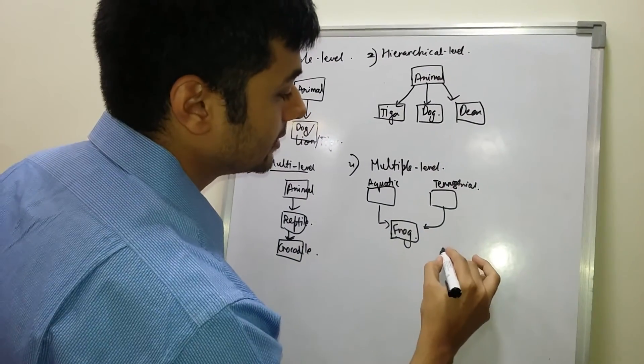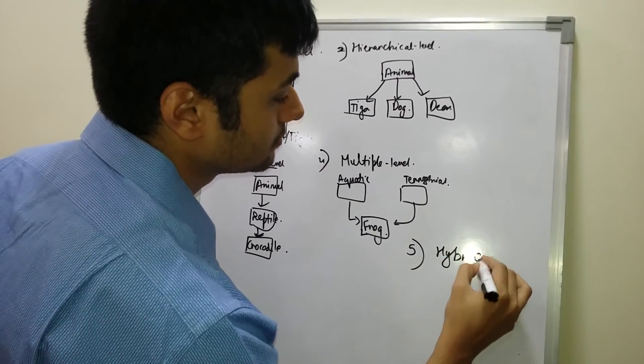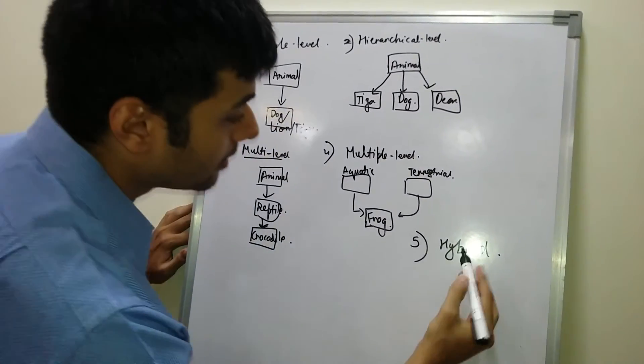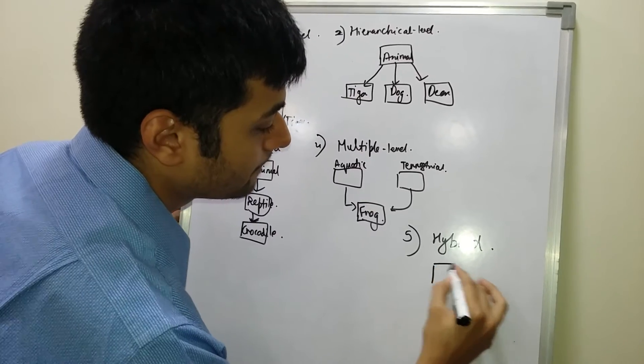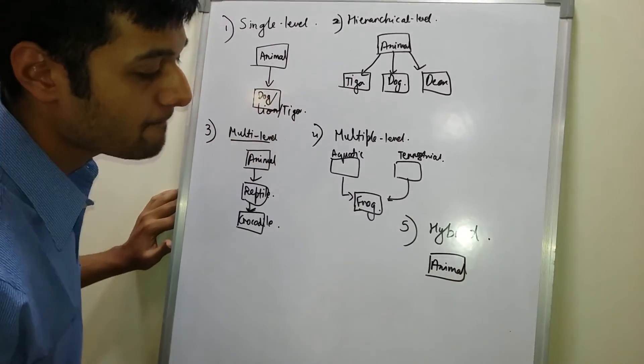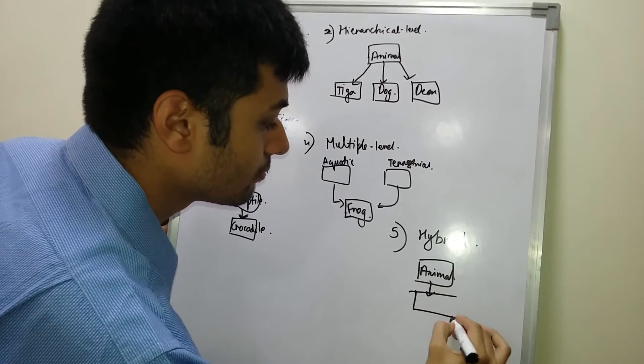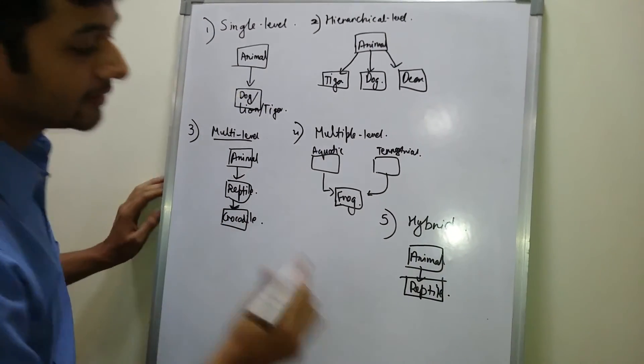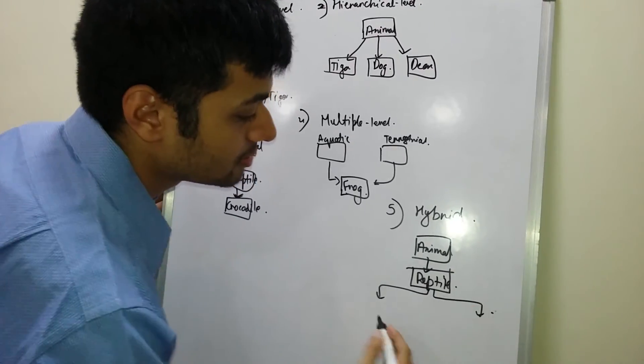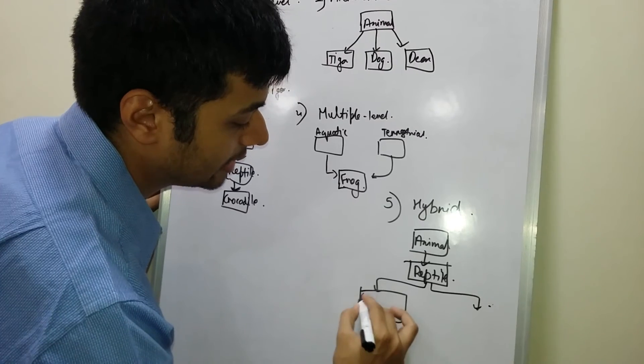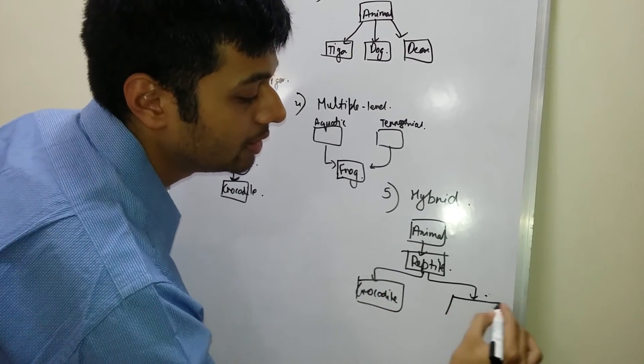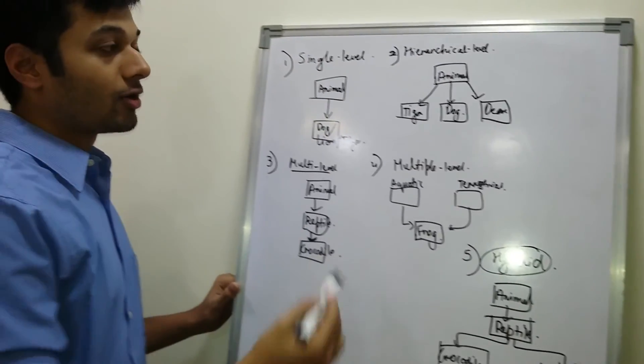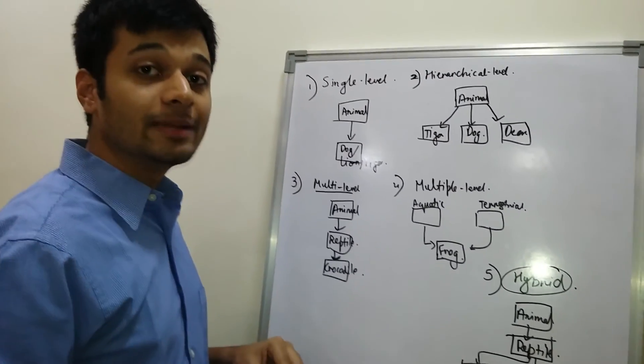The fifth is hybrid. In hybrid, it is a combination of multi-level and multiple inheritance. For example, we can take Animal as the base class, Reptile as a derived class, and two derived classes of Reptile - that is, it can be Crocodile or it can be Lizard. So these are all real-life examples of different types of inheritance. Thank you.